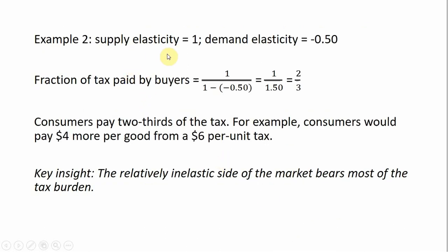Example two: the price elasticity of supply equals one, and the price elasticity of demand equals minus 0.5. Notice in this example that the demand side of the market is relatively more inelastic. Substituting these elasticities into our formula, we see that under these conditions the fraction of tax paid by buyers will now equal two-thirds, so the majority of the tax will be paid by buyers in the form of higher prices.